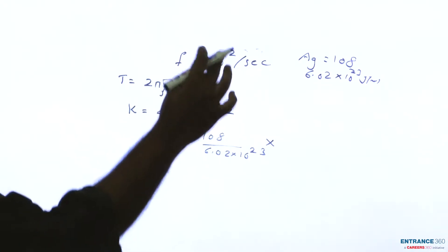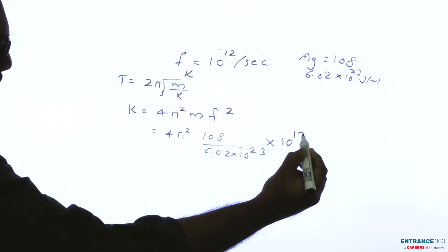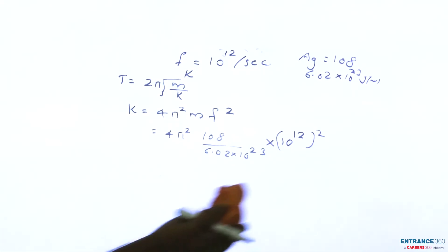Into frequency is given as 10 raise to 12, 10 raise to 12 whole square which will be equal to 10 raise to 24.